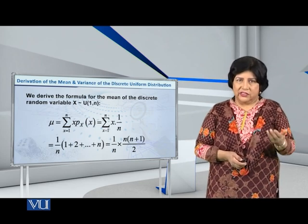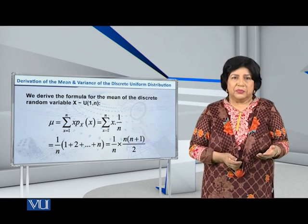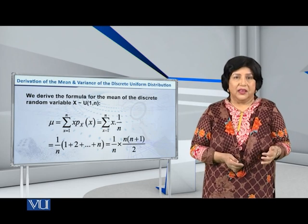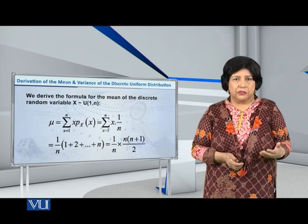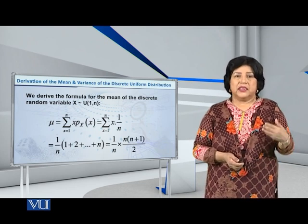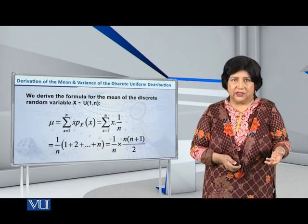Alright, let us derive mu, the mean, is the expected value of x. And because it is a discrete situation, therefore the expected value of x is given by the summation of x into p of x.